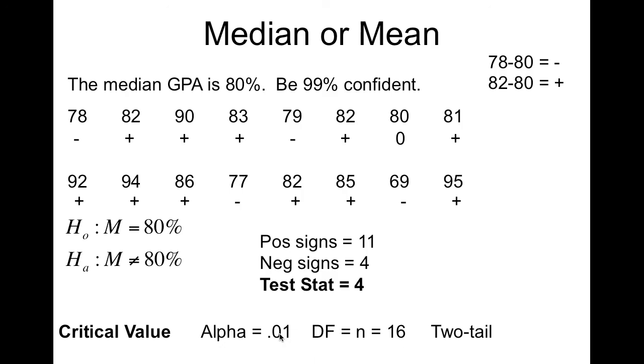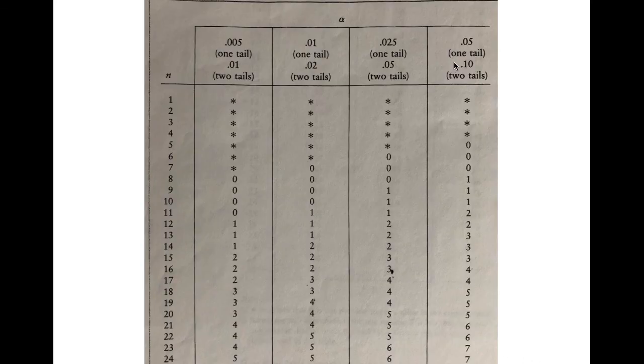Okay, so again, 0.01, two-tail, and degrees of freedom is 16. So, first up top, we added 2-tail, 0.01, so there's our value. This is the column we're looking at. Going all the way down to 16, and 2 is our critical value.